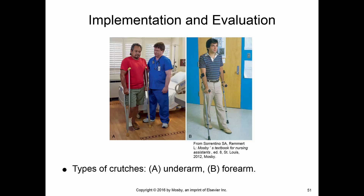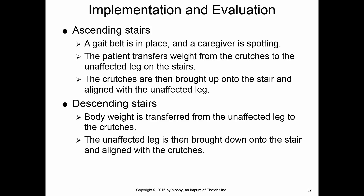There are basically two different kinds of crutches: the under-the-arm crutch, which you're probably used to seeing, and the forearm crutch. In picture B, the forearms are vertical; some forearm crutches have the forearms horizontal. Forearm crutches are typically used for people with permanent gait, musculoskeletal, or neurological problems.